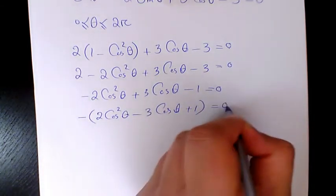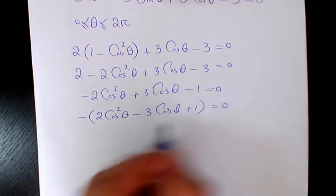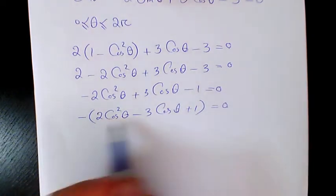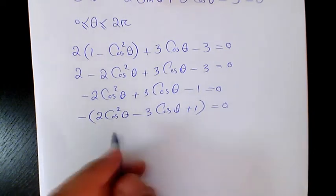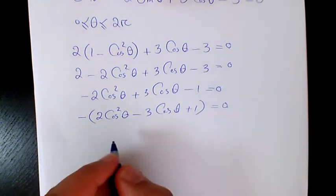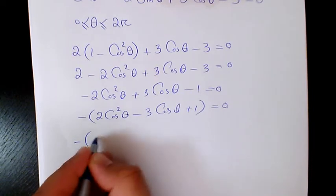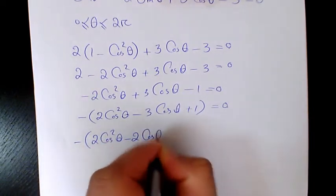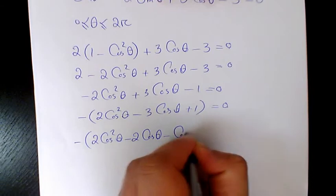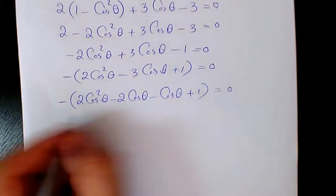Using the AC method, 2 times 1 is 2. We are looking for two numbers that multiply to 2 and add to negative 3, so those are negative 1 and negative 2. That gives us 2 cosine squared theta minus 2 cosine theta minus cosine theta plus 1 equals 0.